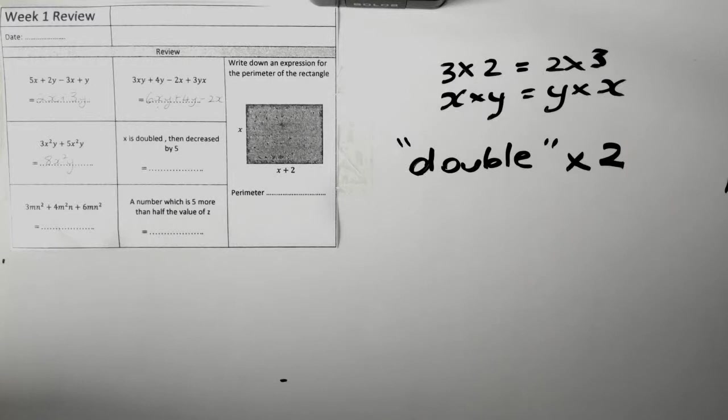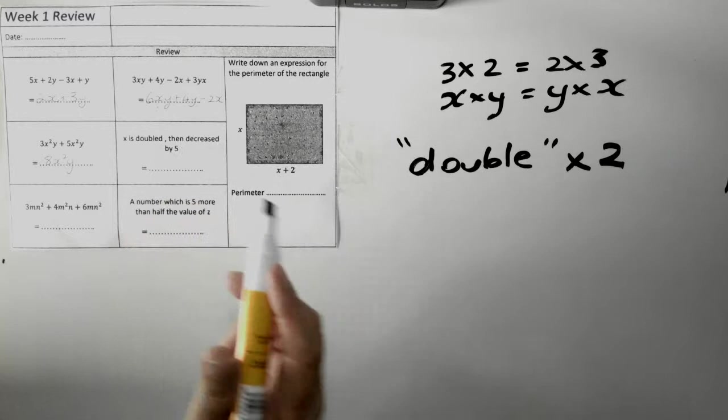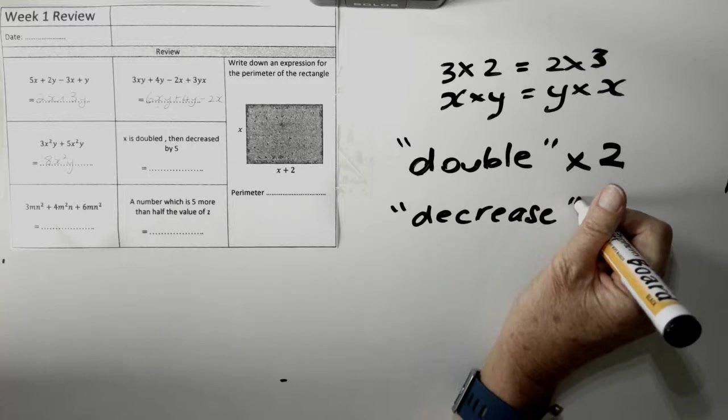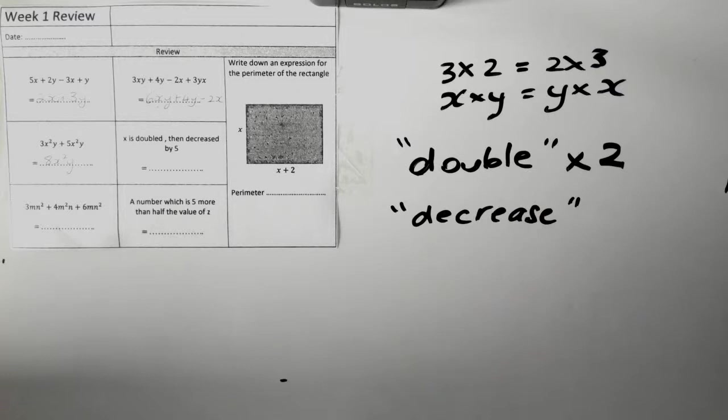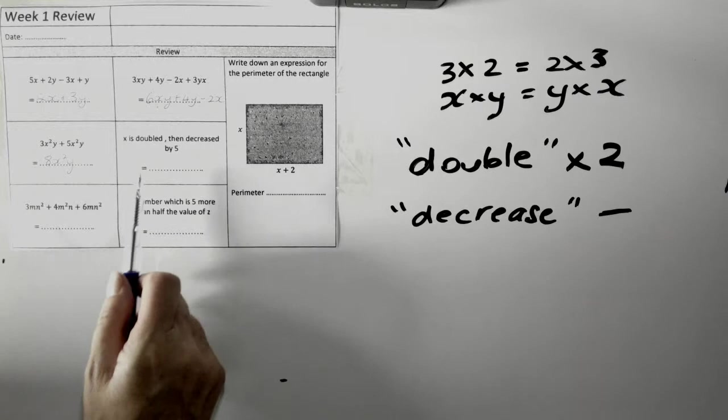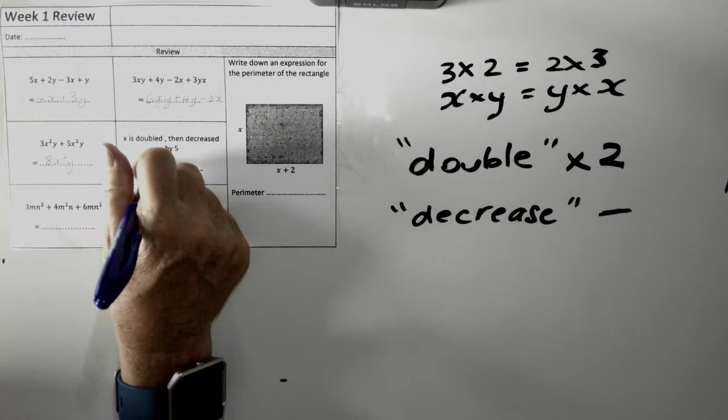Okay. The second part is decreased by five. If I decrease the number of cats in my house by two, that means I've gone down two. So, decrease means minus. Okay. So, let's put these words into symbols. X is doubled. That means times by two.